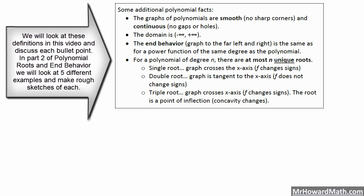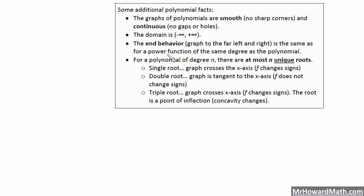So let's look at this information that we have in front of us here, some additional polynomial facts. The graphs of polynomials are smooth, they have no sharp corners, and they are continuous, so they have no gaps or holes. Polynomials can have a lot of different shapes, but they'll always be smooth. There are no sharp corners, for example.